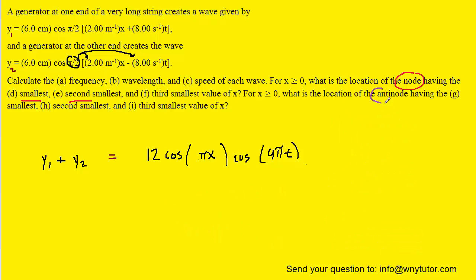Now, for an antinode, it turns out that we want the cosine of πx to achieve its maximum value. Now, the maximum value of cosine of πx would be plus or minus 1.